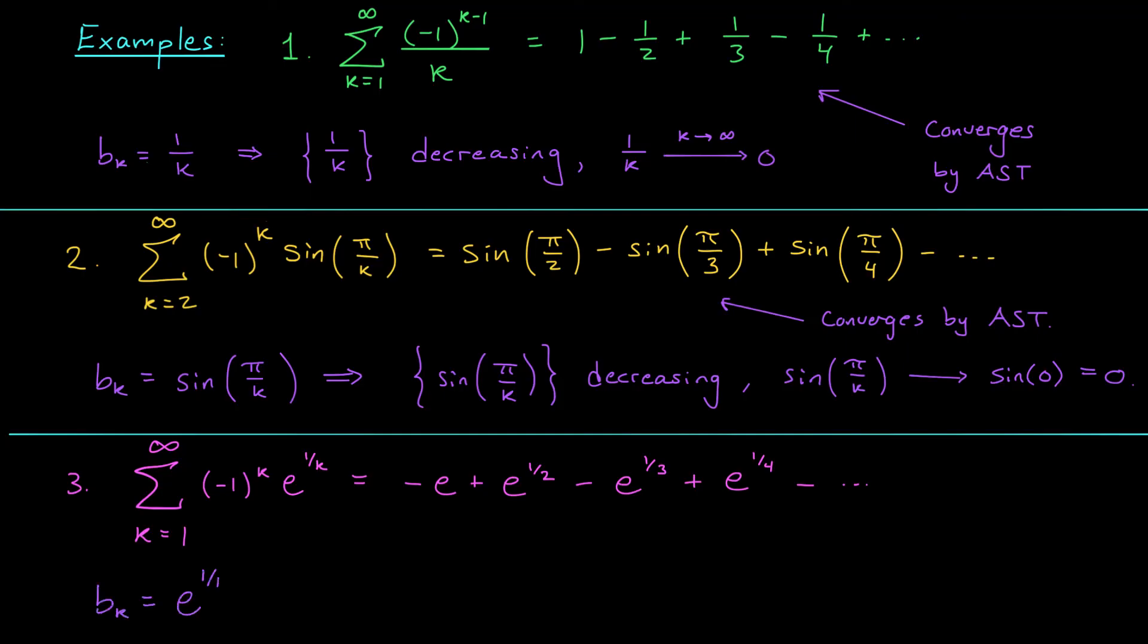The question is, does this sequence decrease, and does it tend to zero? Well it certainly decreases, right? As I let k get bigger and bigger and bigger, I'm taking bigger and bigger roots of the number e. Those will get smaller. So yeah, my sequence is decreasing. What about my second condition? Do my terms converge to zero? No.